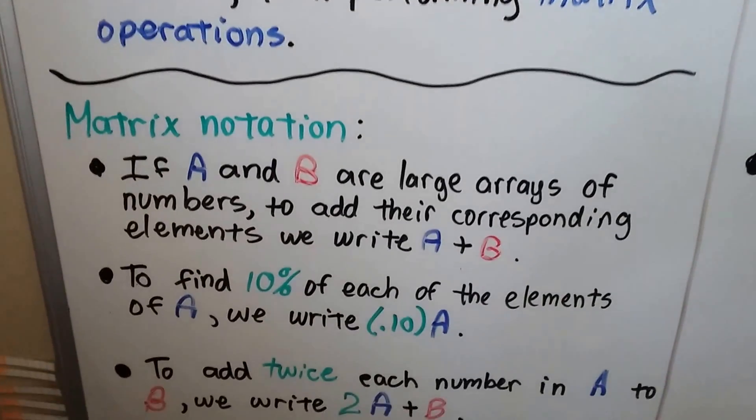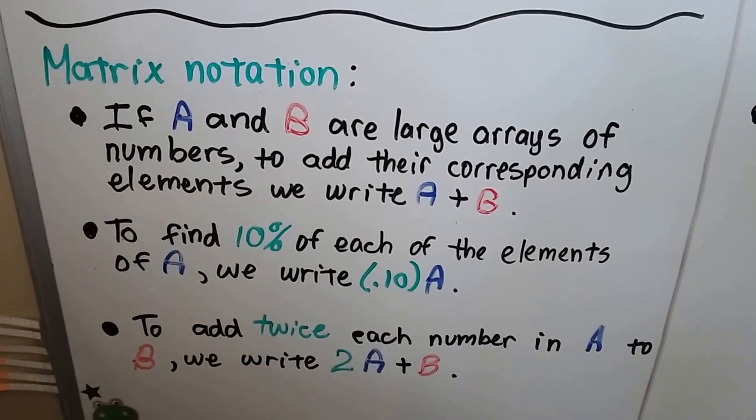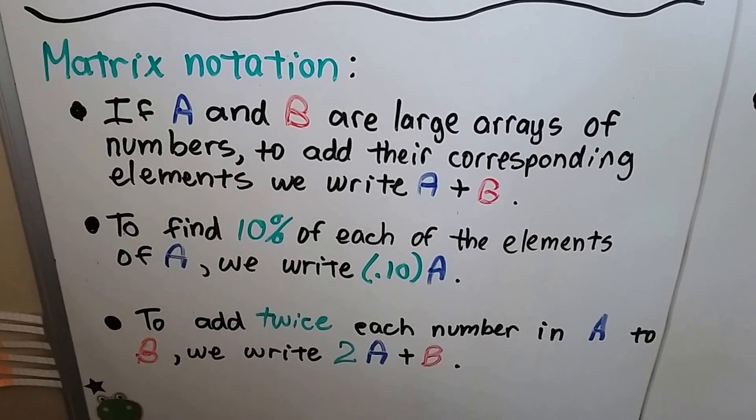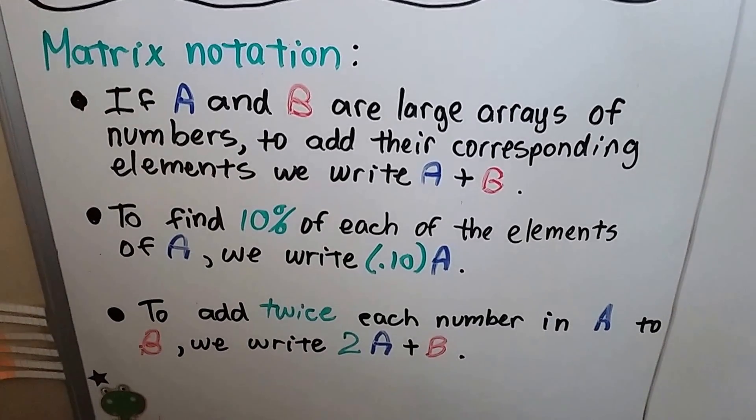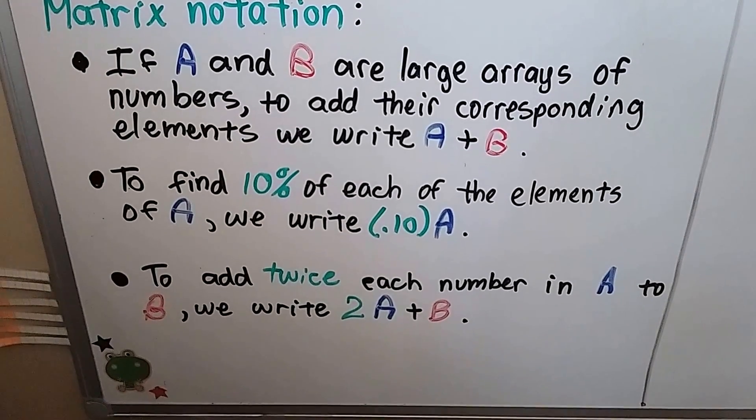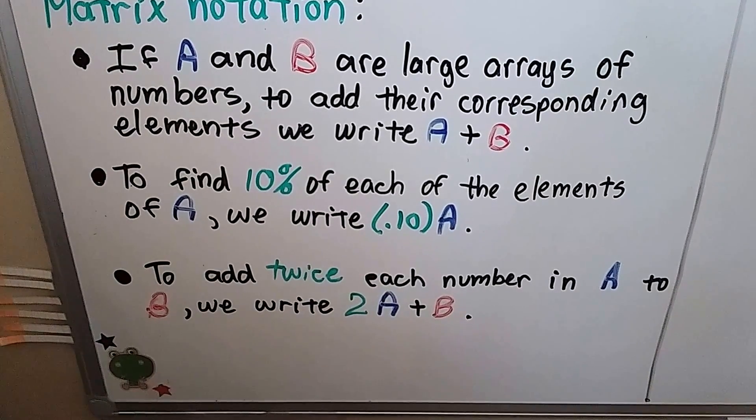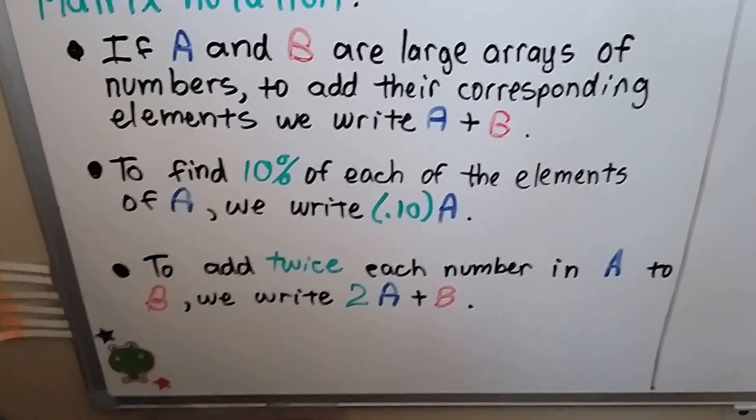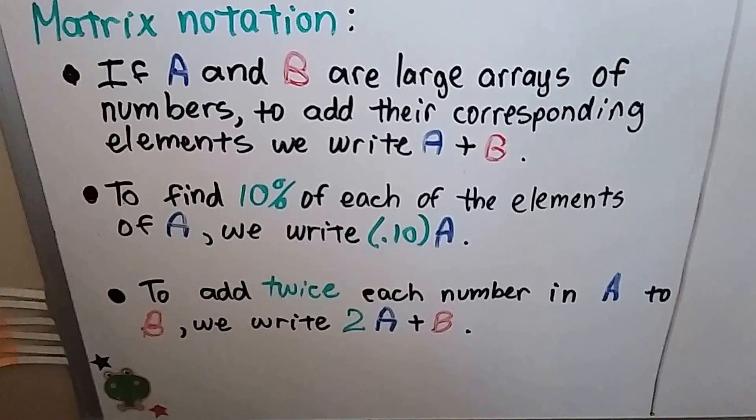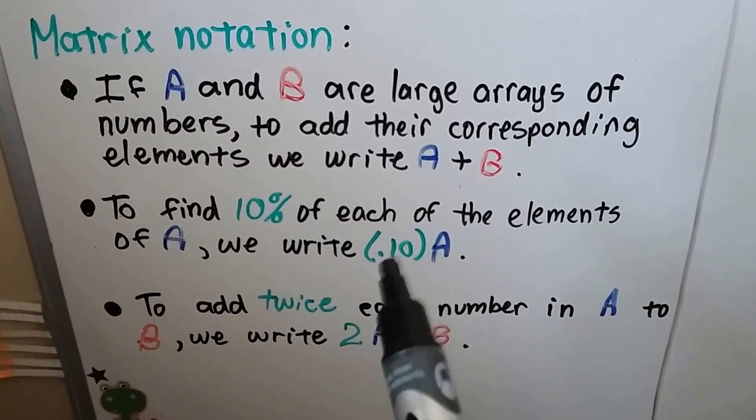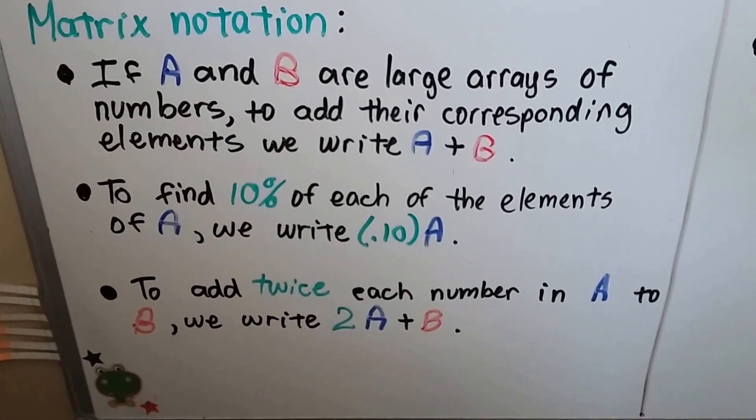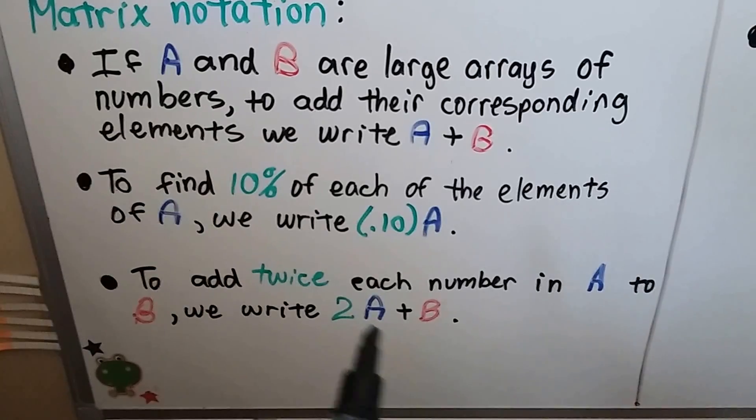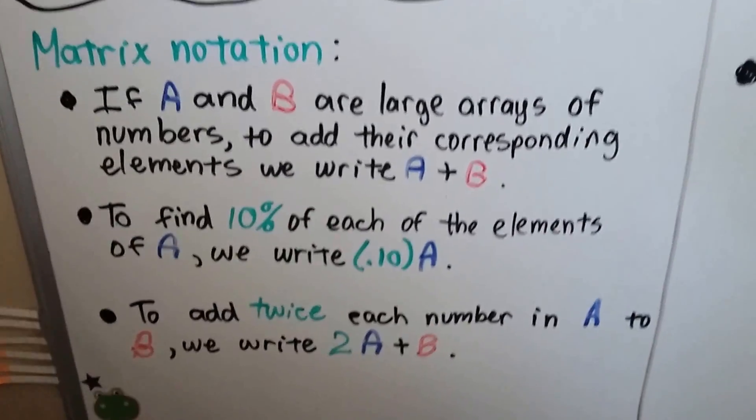I want to have you keep in mind some matrix notation. If A and B are large arrays of numbers, to add the corresponding elements, we write A plus B. To find 10% of each of the elements of A, we write 0.10 in parentheses times A. And to add twice each number in A to B, we would write 2A plus B.